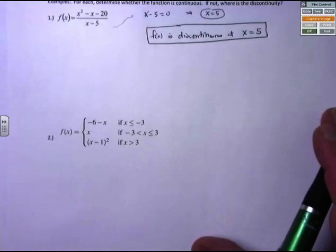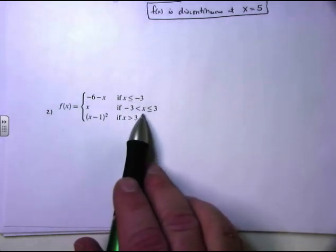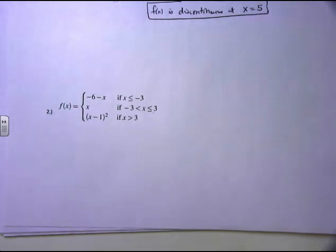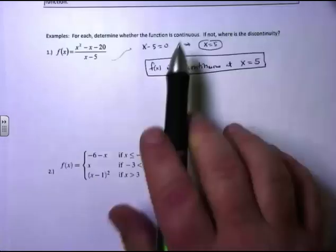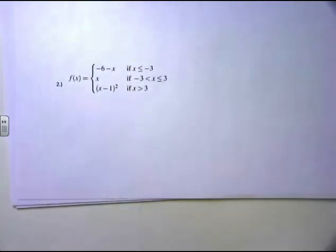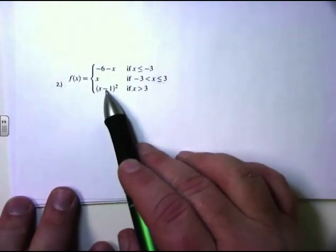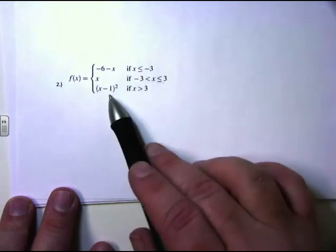The next one is a piecewise function. I have f of x equal to negative x minus x if x is less than or equal to negative 3, x if negative 3 is less than x which is less than or equal to 3, and x minus 1 quantity squared if x is greater than 3. I've got to figure out if or where this function is discontinuous. The breaking points are where x equals negative 3 and where x equals 3.